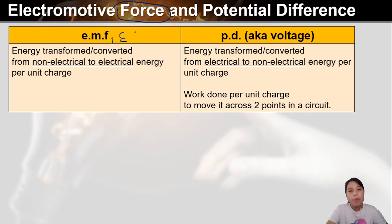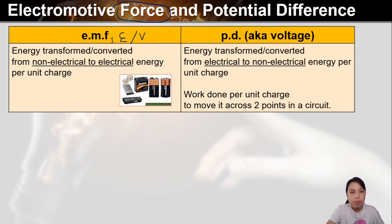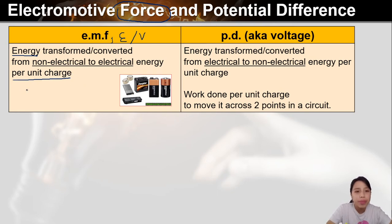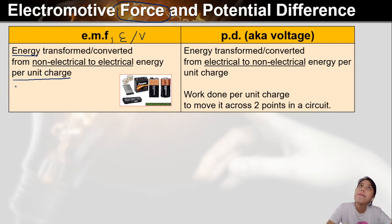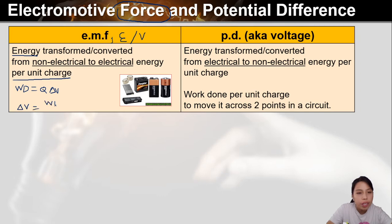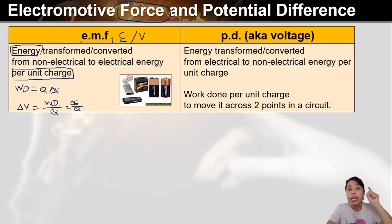What is EMF? EMF is basically energy per unit charge. But you need to specify what kind of energy transforms to what. Energy transforms from non-electrical to electrical energy per unit charge. This comes from what you've seen before: work done equals Q times change in V. If you rearrange for V, that gives you energy over Q — change in energy over Q. That's where it comes from.